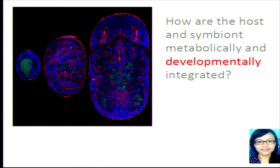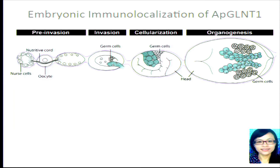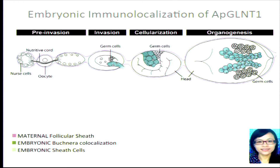Xiaoling Liu came to visit my lab from National Taiwan University for one year, and she started using the APGLNT1 transporter to localize it during development. We asked how the host and symbiont are developmentally integrated. In terms of Bucknera, we can divide development into three phases: pre-invasion, invasion, cellularization, and organogenesis. APGLNT1 localizes to three places: the maternal follicular sheath — this purple line around embryos — with co-localization when embryonic Bucknera invade, and then in embryonic sheath cells once they form.